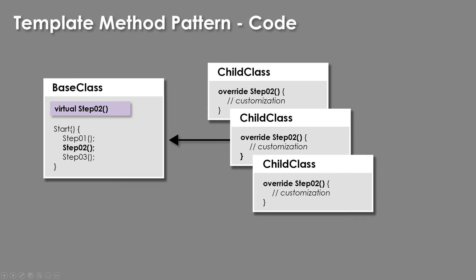In our base class, on start or whenever it is created, we run step one, step two, and step three. We want child objects to be able to change what step two is. In a weapon system setup, for example, you could have equip the weapon, set up the weapon, and then configure stats — and you may want each weapon to configure stats differently. The key point is that we are calling a method that can be overridden — either abstract or virtual in C# — but we want other steps in the process to either not be accessed or not be changed.